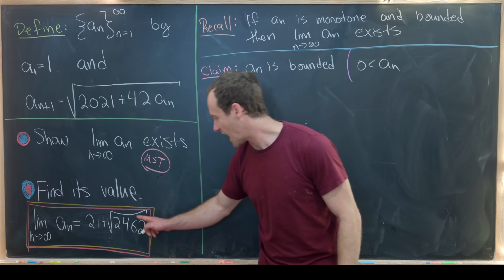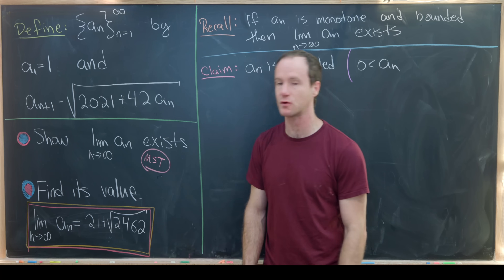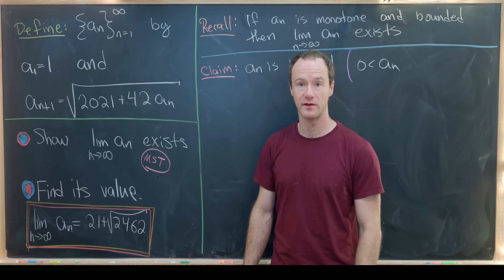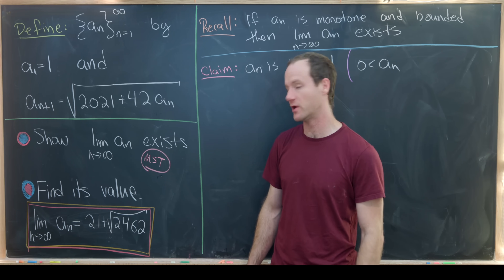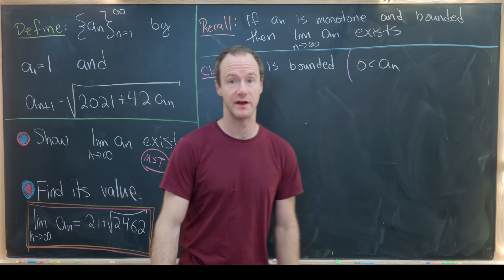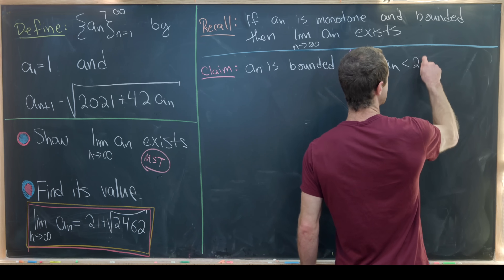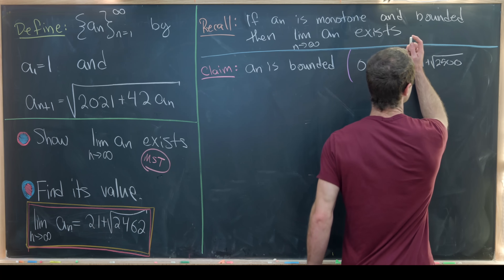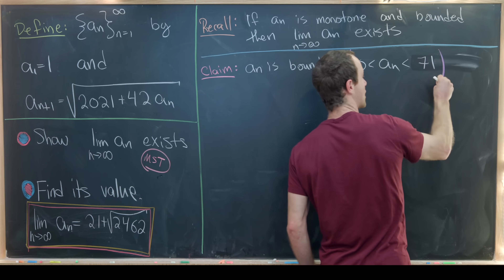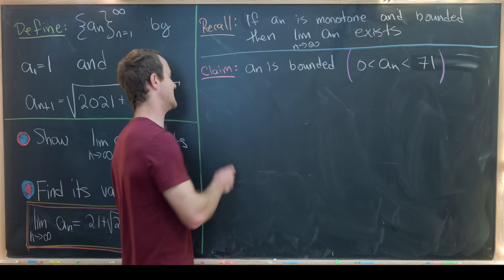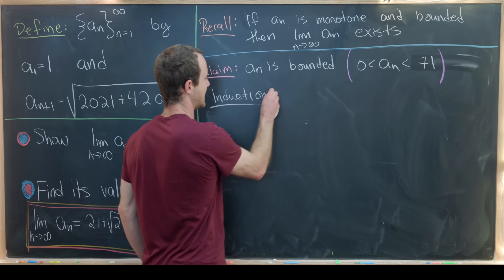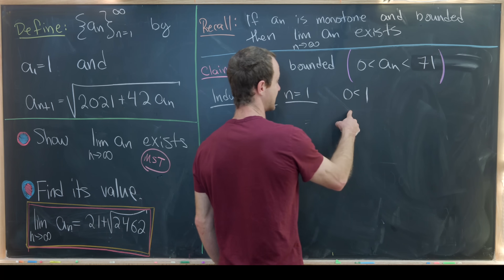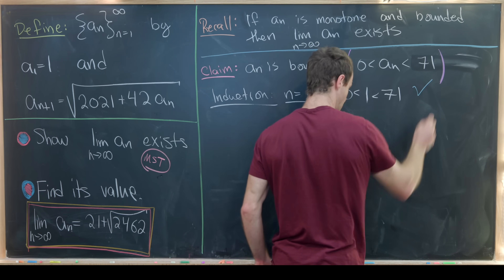To find an upper bound, we look at 21 plus √2462 and find the nearest perfect square above 2462, which is 2500 = 50². So we bound the limit above by 21 plus 50 = 71. We'll show all a_n lie strictly between 0 and 71 by induction. The base case a_1 = 1 satisfies 0 < 1 < 71 clearly.